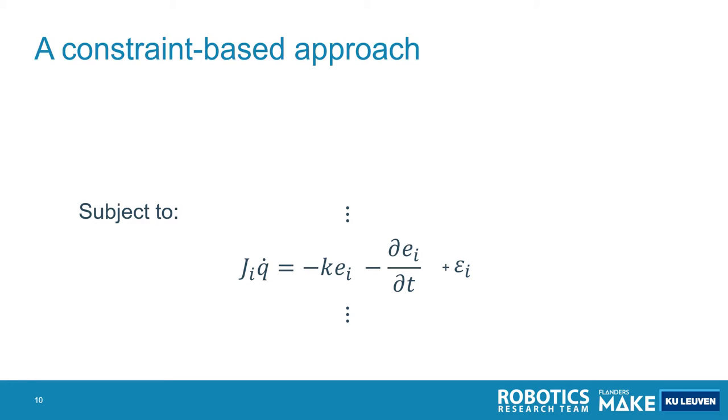Then we need to compute this q dot. And this q dot is computed using an optimization problem, which minimizes the weighted sum of these slack variables.